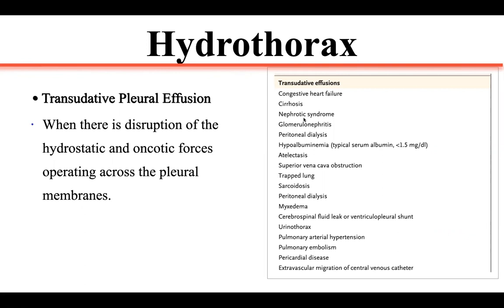Other causes of transudative pleural effusion include nephrotic syndrome and glomerulonephritis, which can lower oncotic pressure; peritoneal dialysis; hypoalbuminemia; atelectasis; superior vena caval obstruction, which can cause right-sided heart failure; trapped lung; sarcoidosis causing inflammation of mediastinal lymphatics blocking fluid absorption; mixed edema; cerebrospinal fluid leak; urinothorax; pulmonary artery hypertension; pulmonary embolism; pericardial disease; and extravascular migration of central venous catheter, which occurs in the ICU.